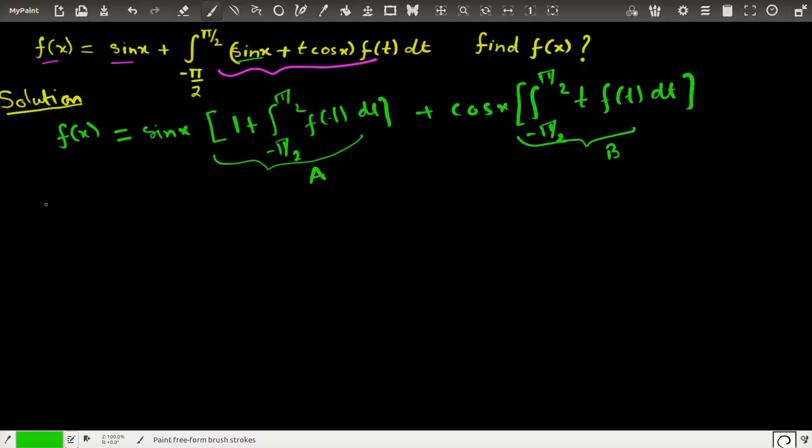So effectively what is our function? Our function effectively is f(x) is equal to, now this is A sin(x), A sin(x) plus we have B cos(x). So we just need to find the values of A and B, and how do I find this?